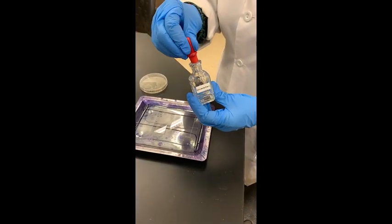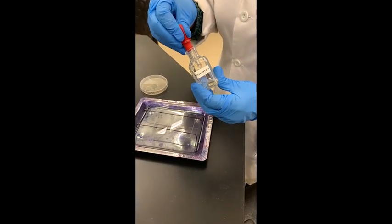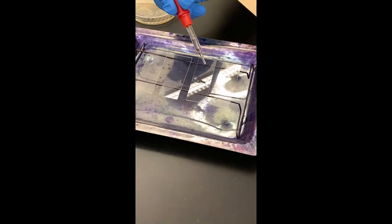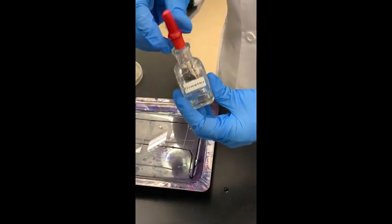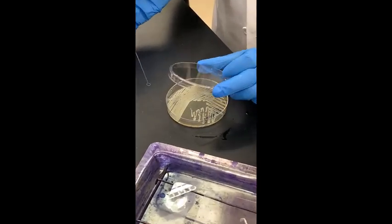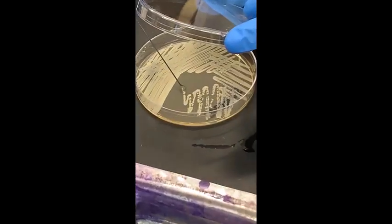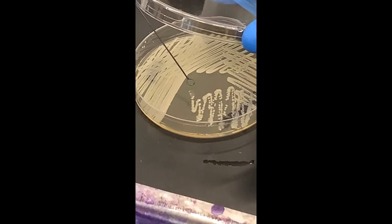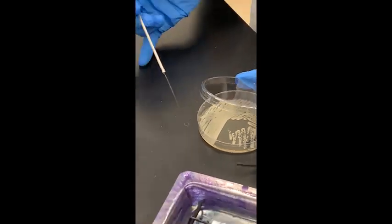If you're working from a solid culture, a plate or a slant, first put a very small drop of sterile water on the clean slide. Then, using a sterilized inoculating loop, aseptically transfer a very small amount of bacteria into the water and disperse them well.